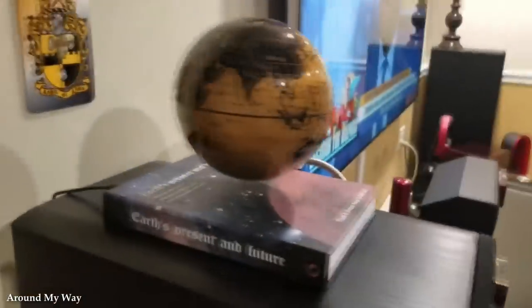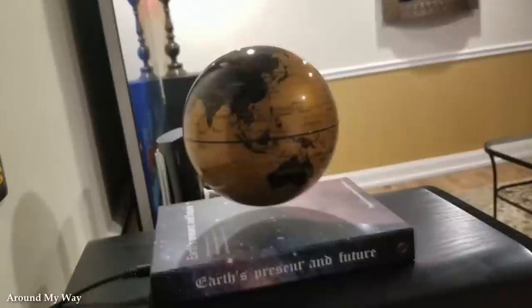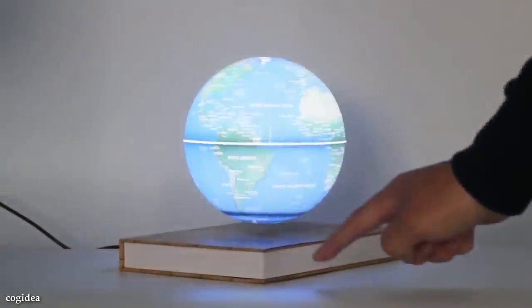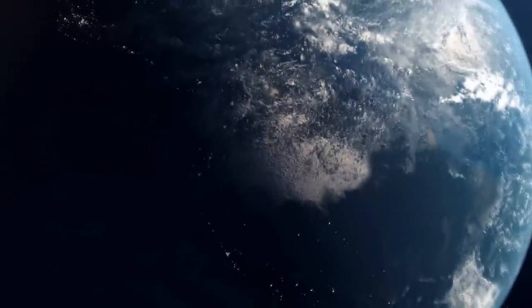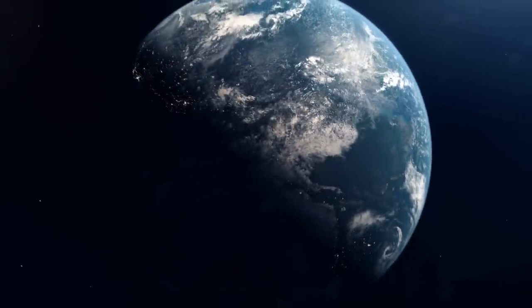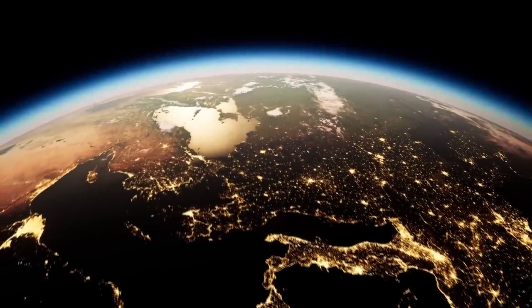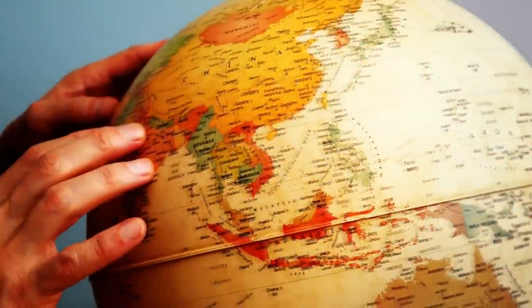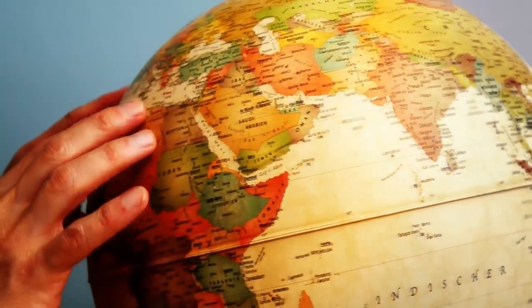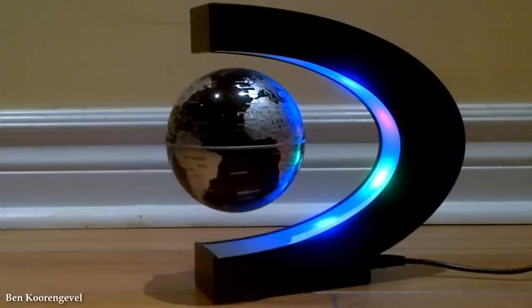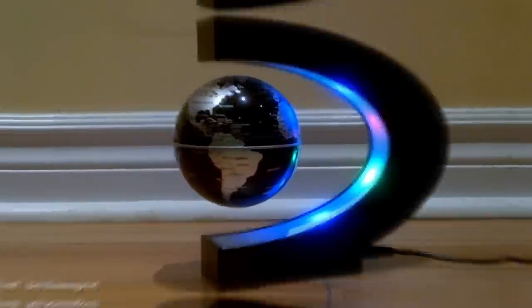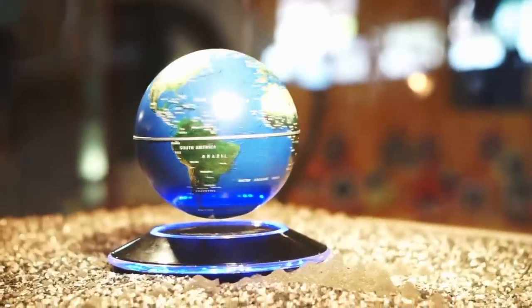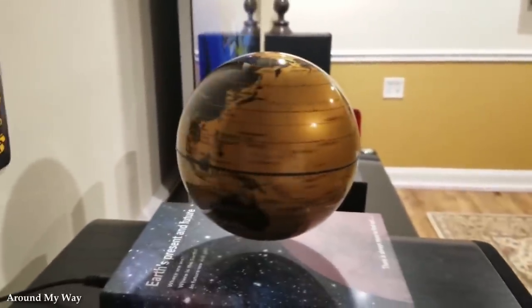As the globe hovers and rotates above the base, it captivates viewers with its enchanting display, evoking a sense of wonder and curiosity. It offers a unique perspective on our planet, allowing viewers to appreciate its beauty from every angle. Beyond that of visual allure, the magnetic levitation globe serves as an educational tool. It offers tangible representations of Earth's geography, allowing viewers to explore and learn about continents, countries, and bodies of water. With its interactive nature, the globe encourages hands-on exploration and sparks conversations about global cultures, landmarks, and environmental issues. The globe also serves as a testament to the progress of technology. The precise engineering and advanced magnetic system involved in creating this levitating effect demonstrate the ingenuity and innovation of scientific advancements. The fusion of art and science showcase the harmony between aesthetics and technological prowess. And it can be used as a decorative piece in homes, offices, or educational institutions, adding a touch of elegance and sophistication to any space. In other words, it would have looked great in Einstein's study.